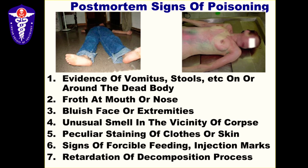As a doctor — though this is important for police officers and investigators also — what are the post-mortem signs of poisoning in a dead body, especially at autopsy? Evidence of vomit or stools in and around the dead body, on the clothes, at the scene — very important. Frothing or froth present at the mouth or nose in a dead body at the time of autopsy or even at the scene — if there is nothing else to explain it, froth is an important sign that can indicate poisoning.